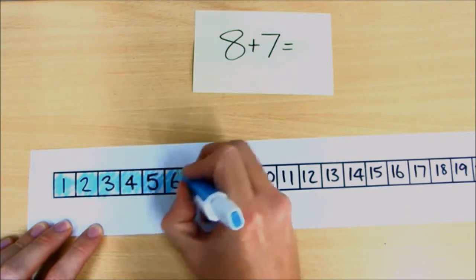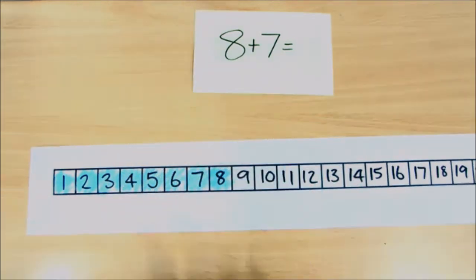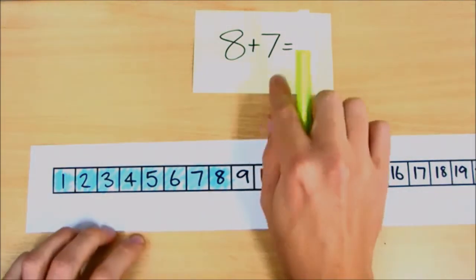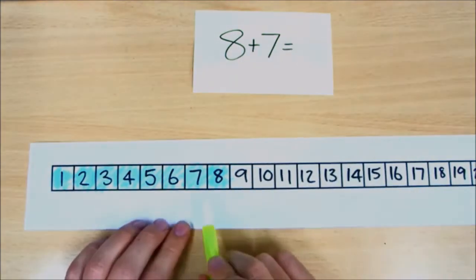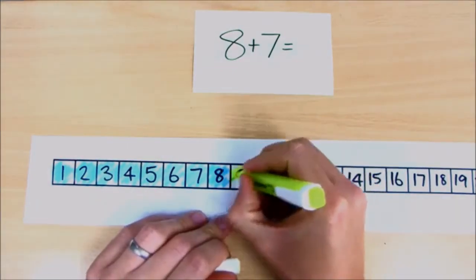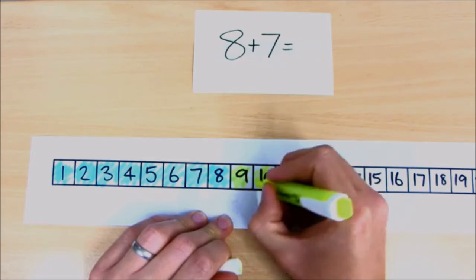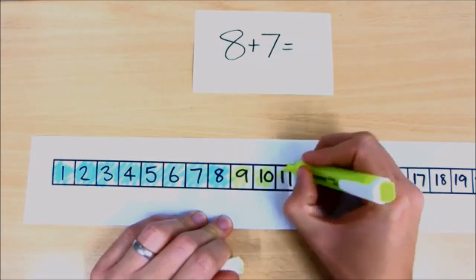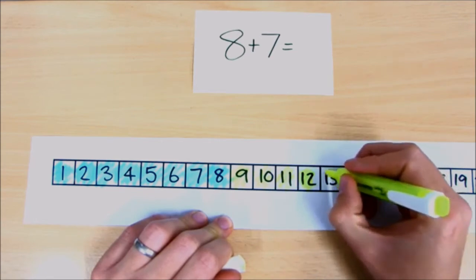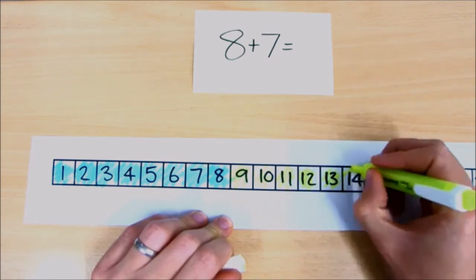And then what we'll do is we'll look for the second number, which is seven, and we need to add seven to these eight here. So we get one, two, three, four, five, six, and seven.